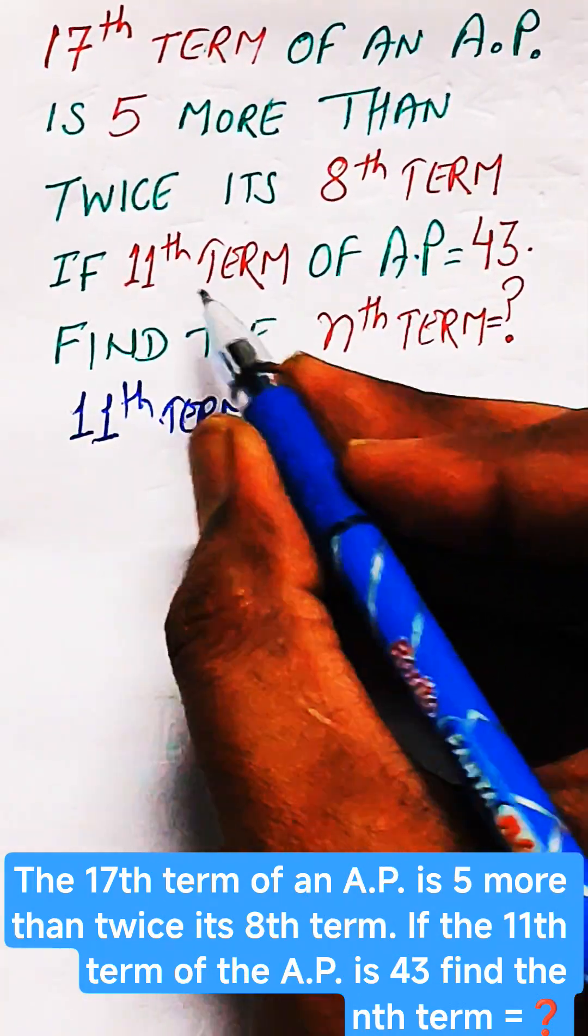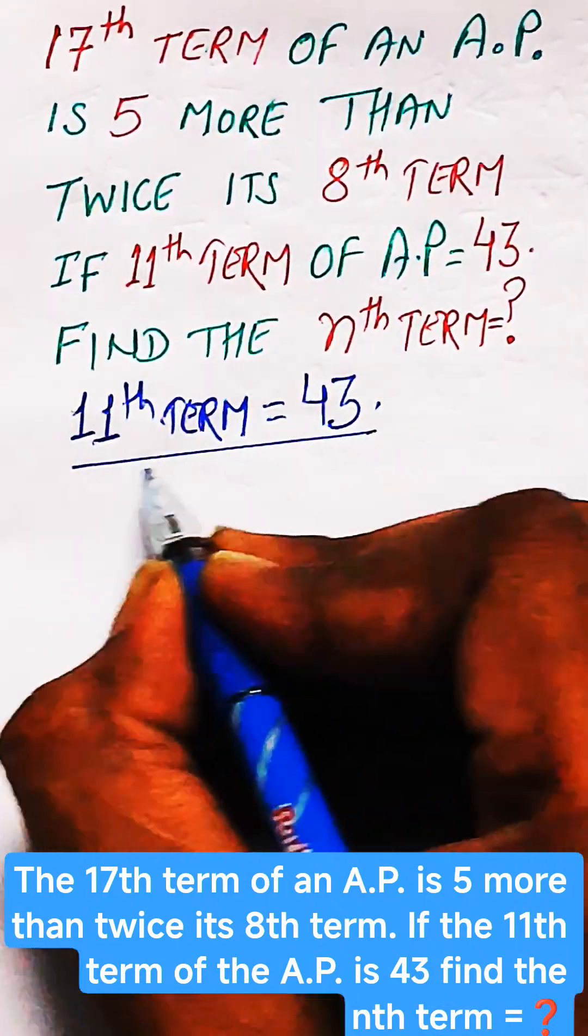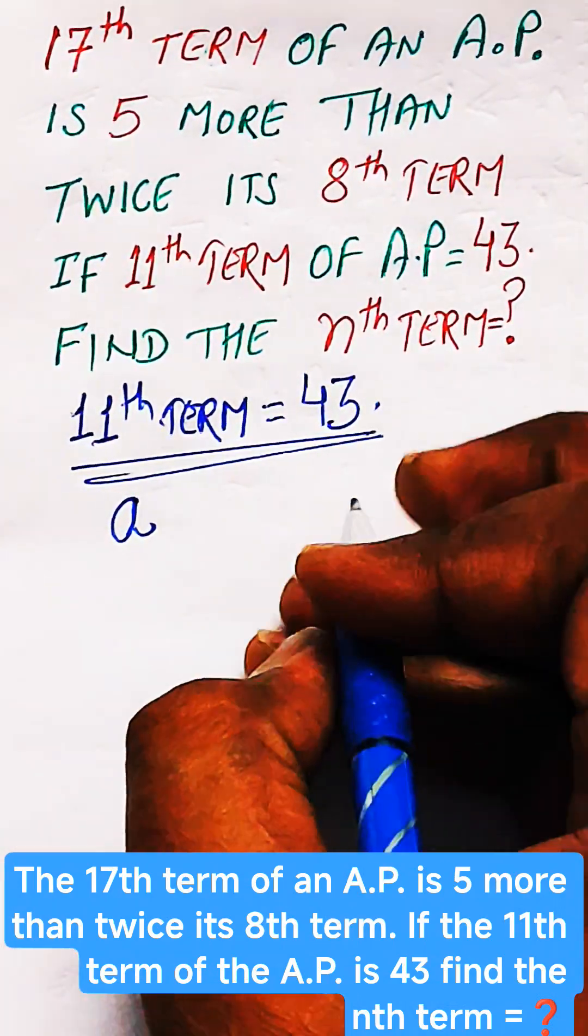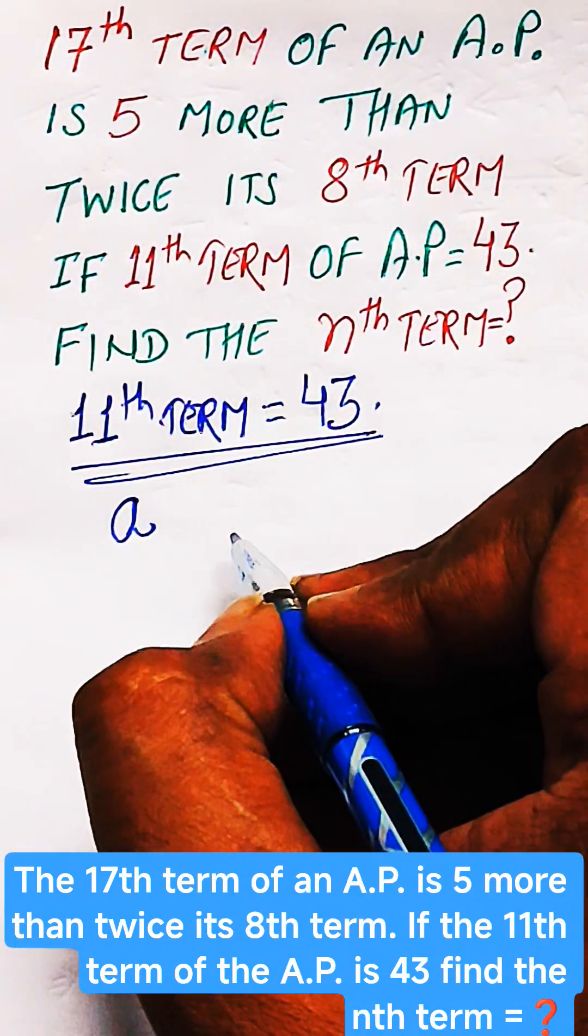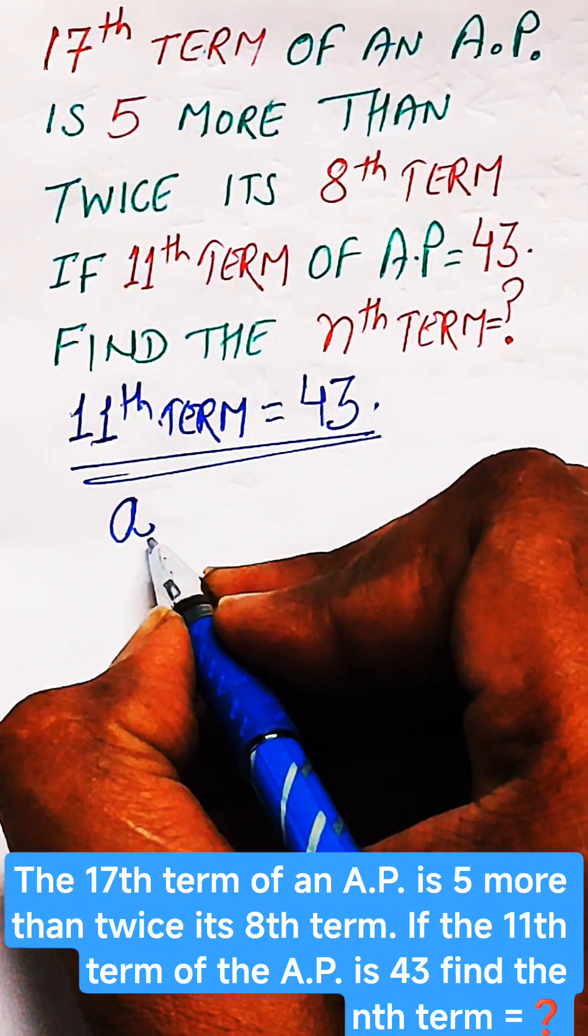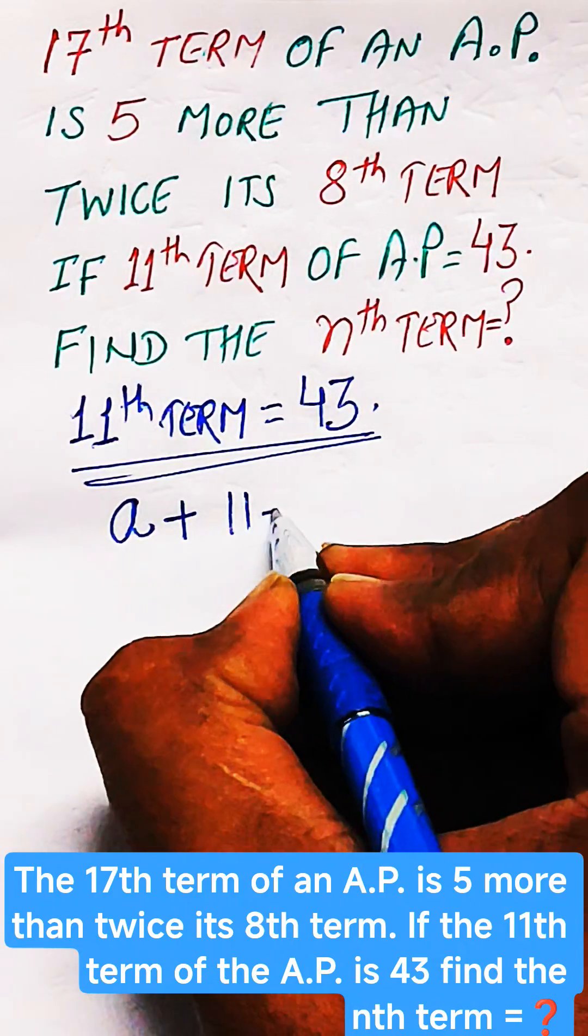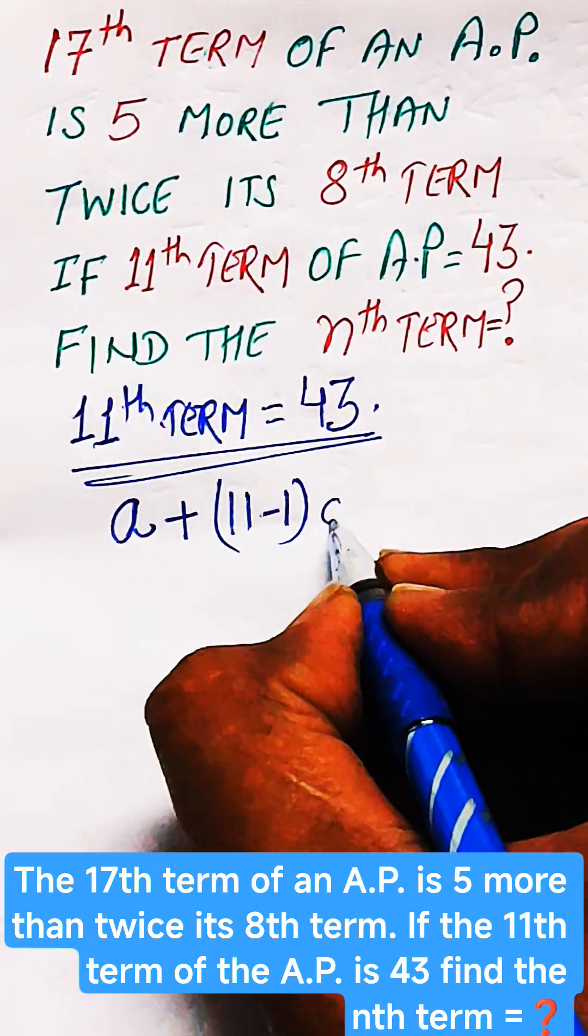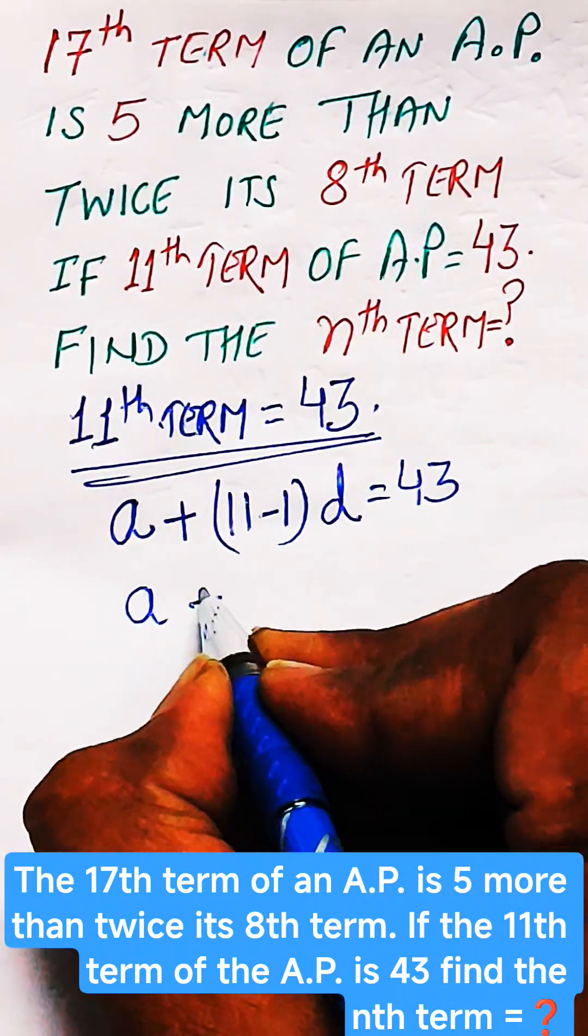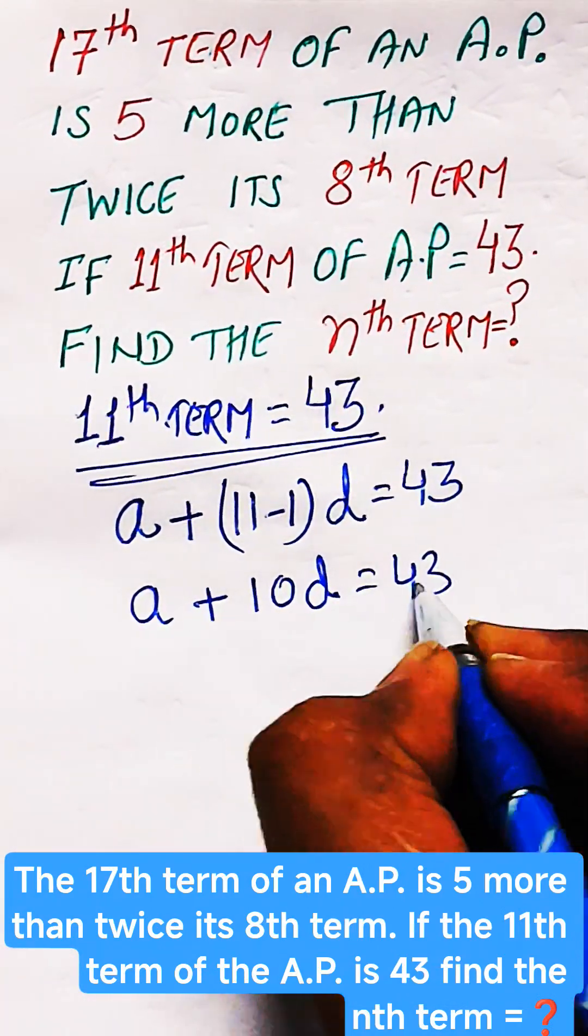The 11th term is given as 43. If that AP has A as the first term and N as the number of terms and D as the common difference, then the 11th term will be A plus (N minus 1), that is (11 minus 1) into D, the common difference. This equals 43, which gives us the relation A plus 10D equals 43. So this is one of the relations we have derived.